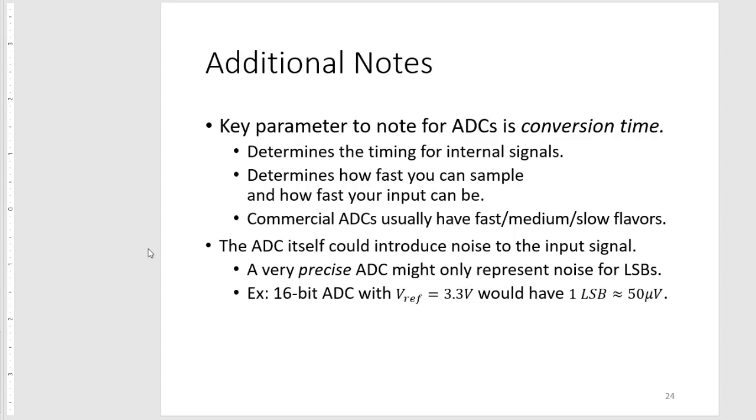One last note is that the ADC itself could introduce noise to the input signal, making the measurement inaccurate. A very precise ADC might only represent noise for its less significant bits. For example, a 16-bit ADC with a reference voltage of 3.3 volts would have an LSB of 50 microvolts. If your ADC is very noisy and generates noise greater than 50 microvolts, the information stored in your LSB doesn't mean quite a lot since you can no longer differentiate the noise at that LSB.